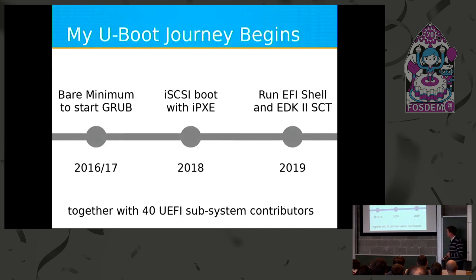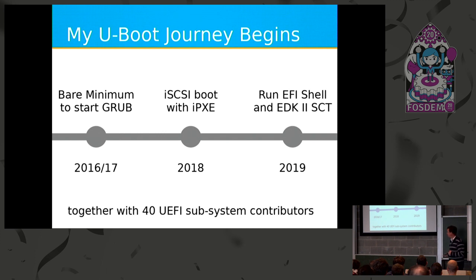I started sending in the first patches in mid-2017, when the implementation could barely boot GRUB. When GRUB loaded, you could boot into Linux — it was working — but nothing else. Then in 2018, with the May edition of U-Boot, I could finally run iPXE and boot from my iSCSI server.